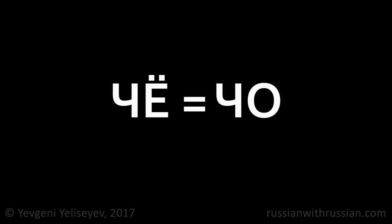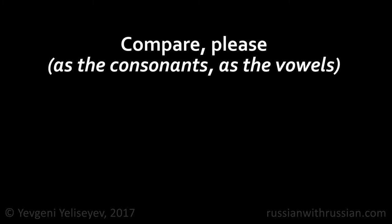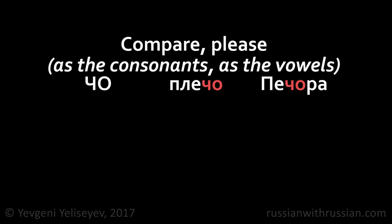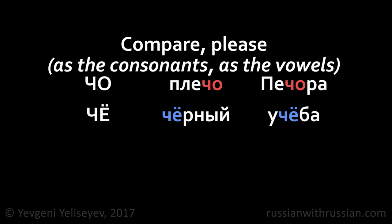There is no difference between the pronunciation of the syllables ЧЁО and ЧЕО — it's just an orthographic feature. Compare, please: ЧО, ПЛИЧО, ПИЧОРА, ЧО, ЧОРНЫЙ, УЧОБА.